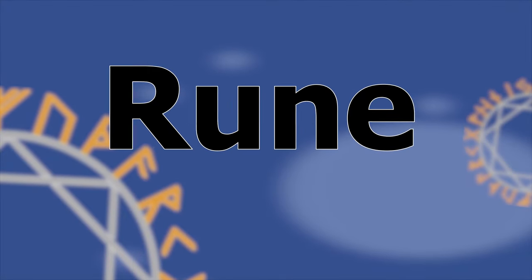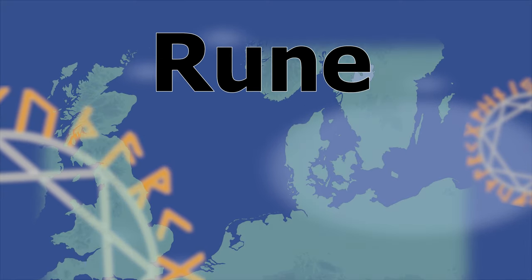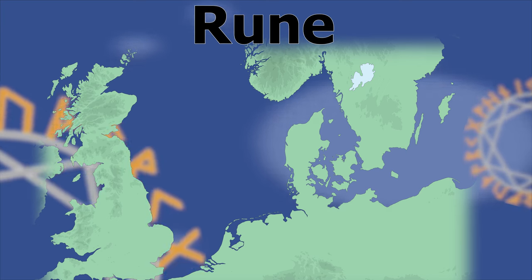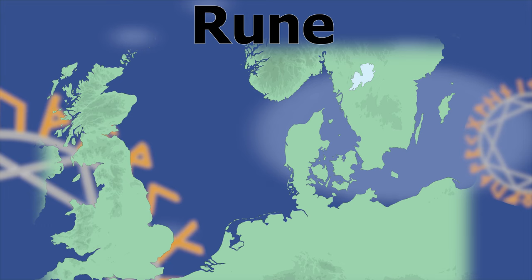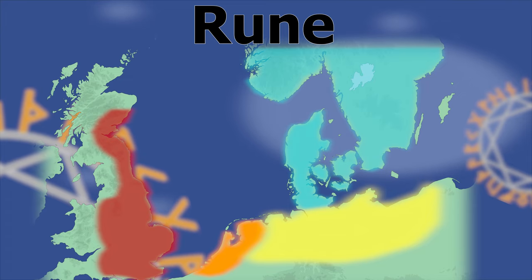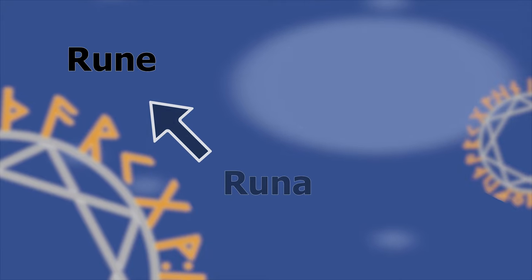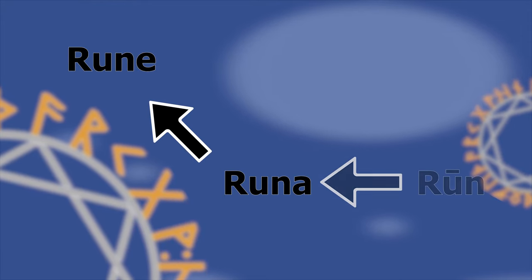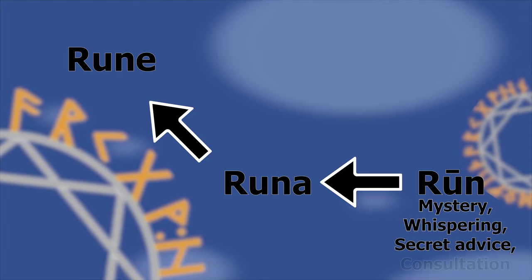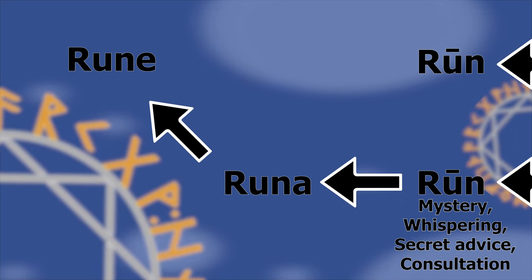We use the word rune in modern English to refer to a series of alphabets which were used in northern Europe from around the 2nd to the 13th century AD by speakers of Germanic languages — the various predecessors of modern English, Dutch, German, and the Scandinavian languages. The word rune comes to modern English from the Latin runa, which comes from the Old Norse rune, which carried connotations of mystery, whispering, secret advice, or consultation. Old English also had the word rune, but this went extinct in the medieval period.